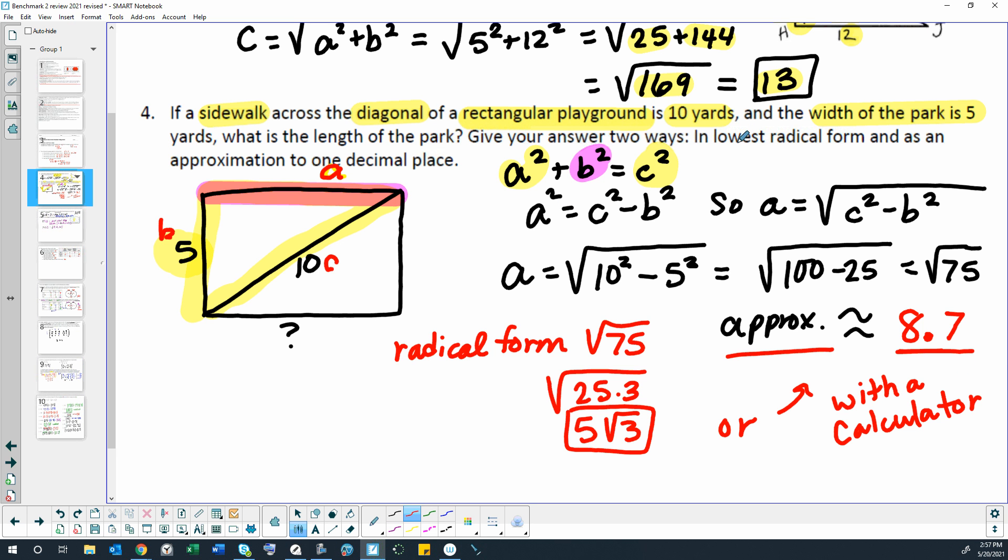This question says we should leave our answer two ways. The other way says to leave it in lowest radical form. If we're taking the square root of 75 and we use a calculator, we're just approximating it. If we want an exact answer, there's a way to simplify this called lowest radical form. We find the biggest perfect square that will divide into 75. The biggest one I can think of is 25. 25 times 3 is the same as 75, and the square root of 25 is 5, because 5 times 5 is 25. But that leaves this 3 inside our square root. So this would be the lowest radical form for this answer.